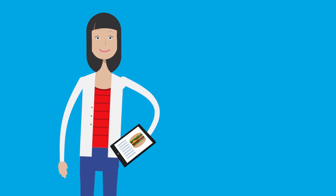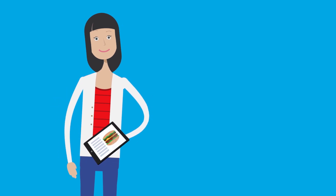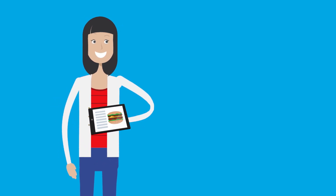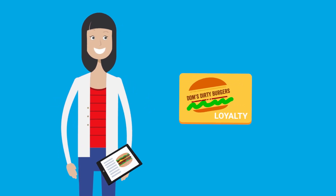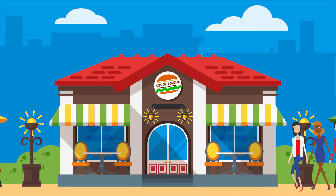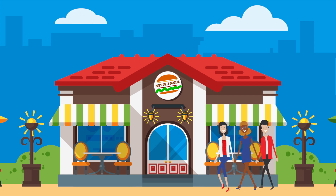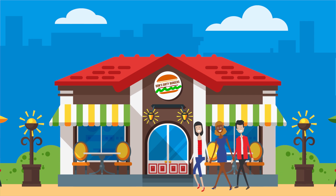Jane, one of Dom's customers, orders a burger bundle on the mobile app for Click & Collect and adds her loyalty membership to get a reward. The next week, Jane goes out with some friends and stops at Dom's Dirty Burgers for dinner.